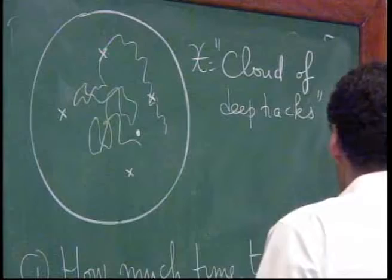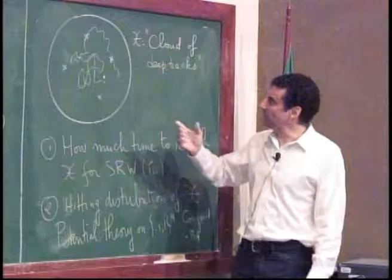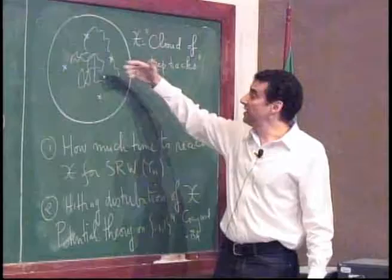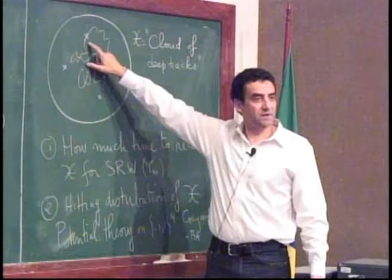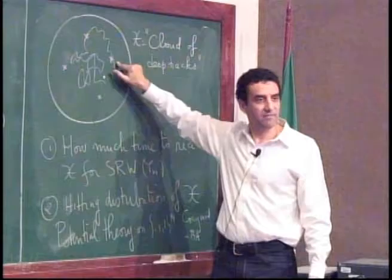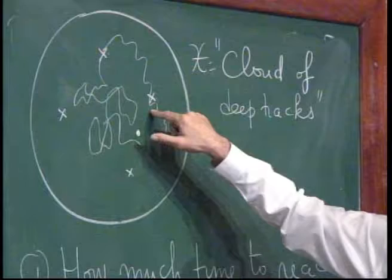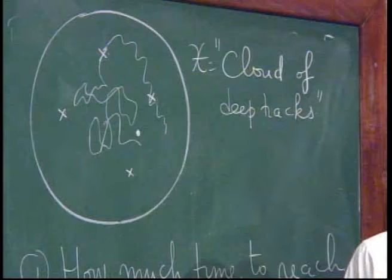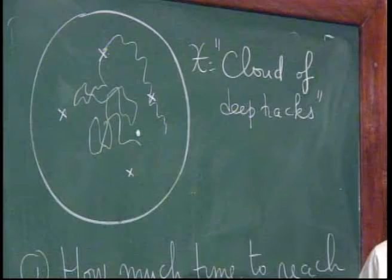Now I want to talk about what happens at shorter timescales — extremal aging. Imagine you take timescales too short to find a second deep trap of the same depth after getting out of the first. In this shorter timescale the limit cannot be a stable subordinator — something else happens. This is what we call extremal aging.